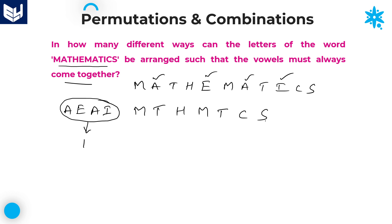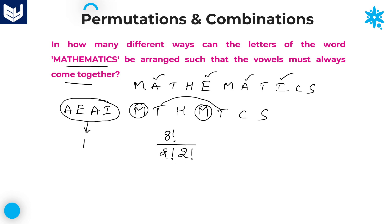Count the total letters: 7 remaining consonants plus one single entity gives 8. These 8 letters can be arranged in 8 factorial ways. But the letter M is repeated 2 times, so divide by 2 factorial, and the letter T is also repeated 2 times, so divide by another 2 factorial. So we have 8 factorial divided by 2 factorial times 2 factorial.